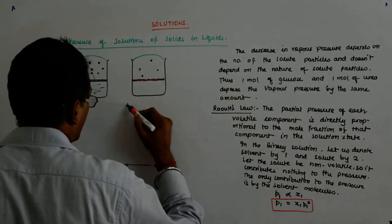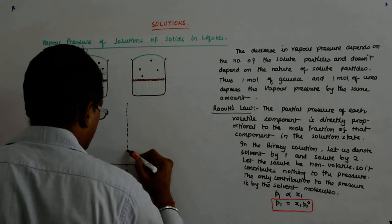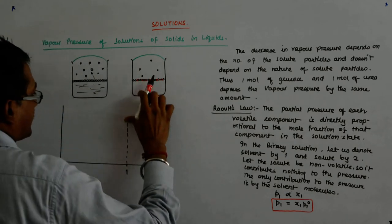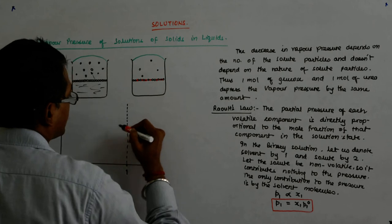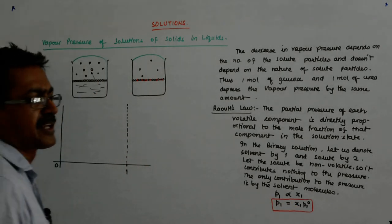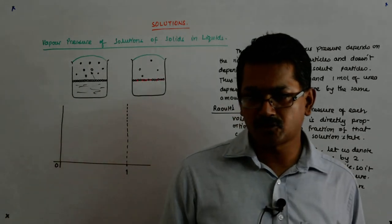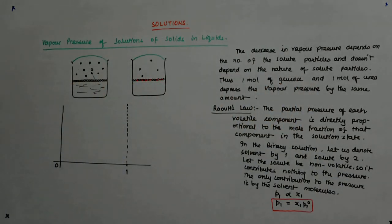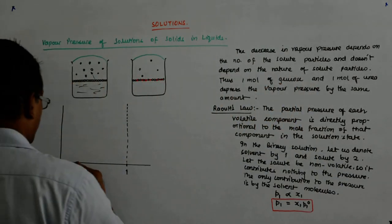What happens if it becomes equal to 1? Then there is no solute. Then what happens? Even the equation tells you that it is equal to the vapor pressure of the pure component. So it is the vapor pressure of the pure solute.